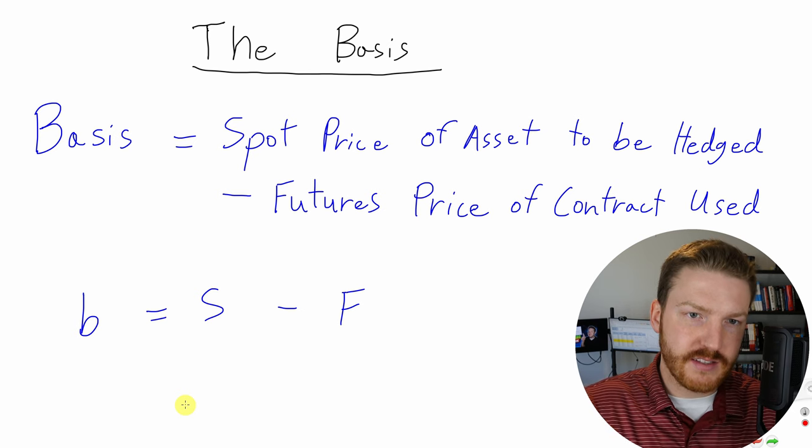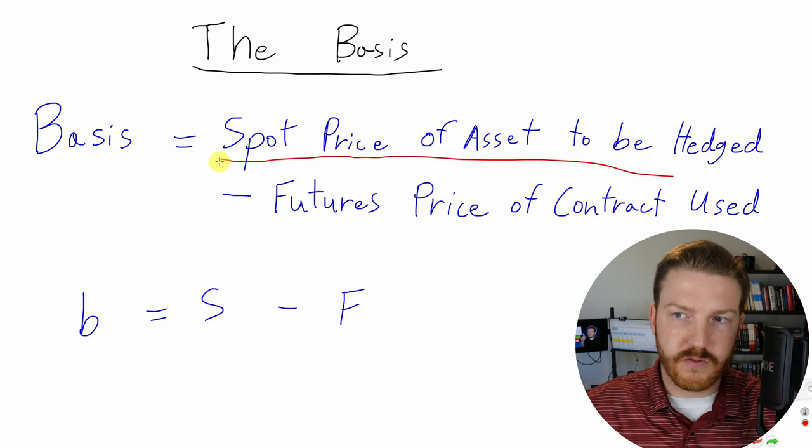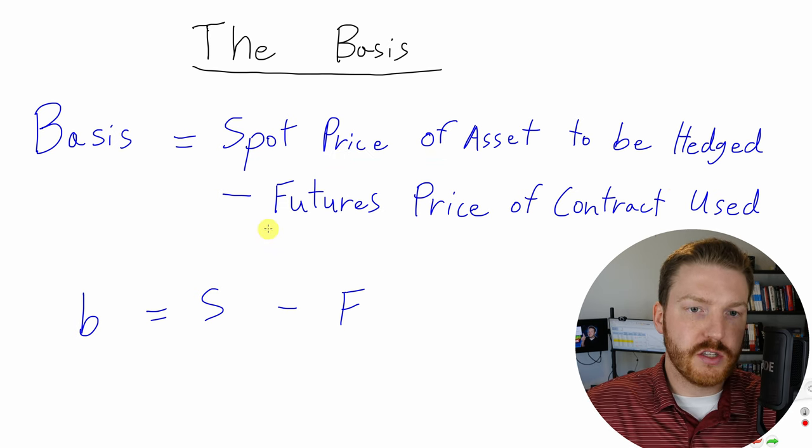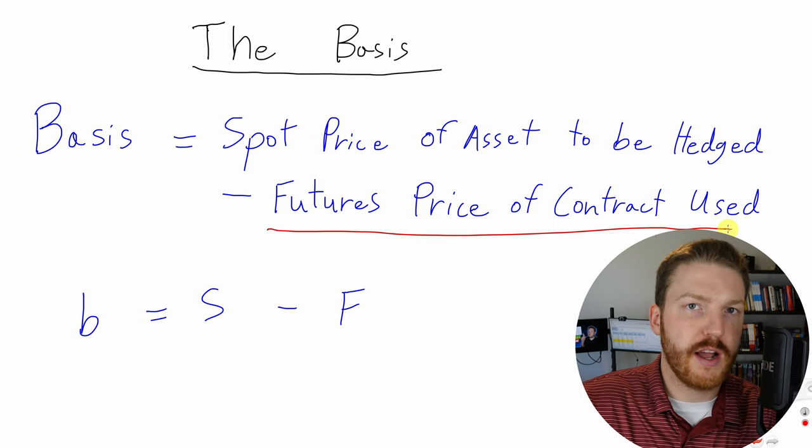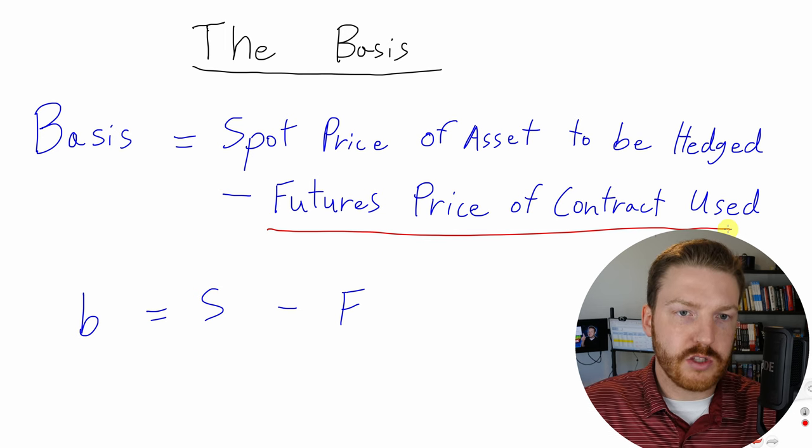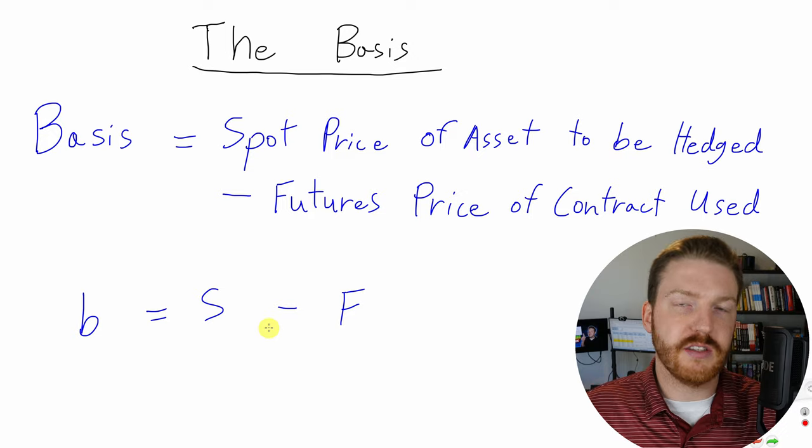So in this example, the spot price would just be the current price of gold, like right now. And then the futures price on the contract used to hedge it would be the futures price for a gold contract that ends two months from now. And so the basis would be the difference between those two prices at this point in time.